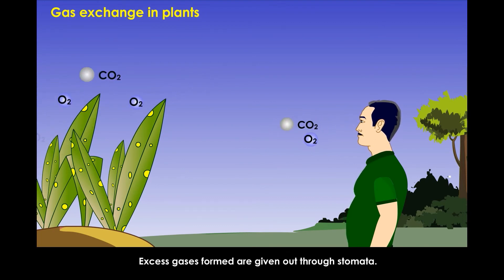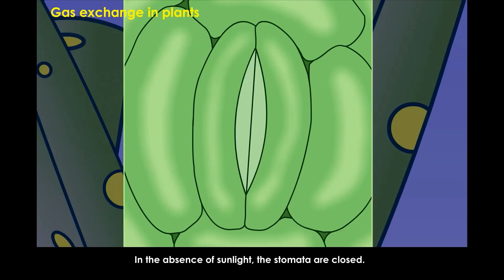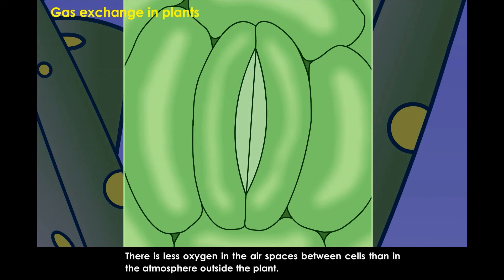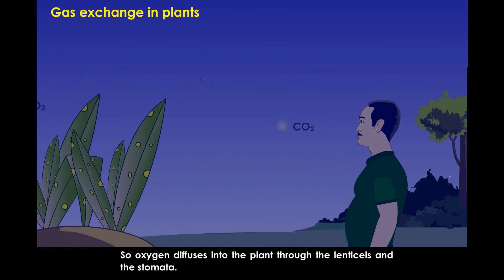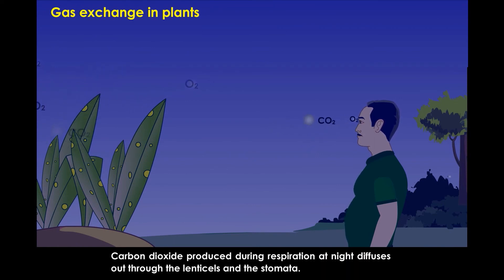In the absence of sunlight, the stomata are closed. There is less oxygen in the air spaces between cells than in the atmosphere outside the plant. So, oxygen diffuses into the plant through the lenticels and the stomata. Carbon dioxide produced during respiration at night diffuses out through the lenticels and the stomata.